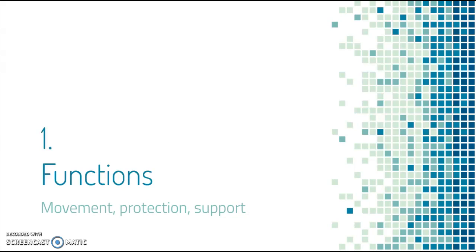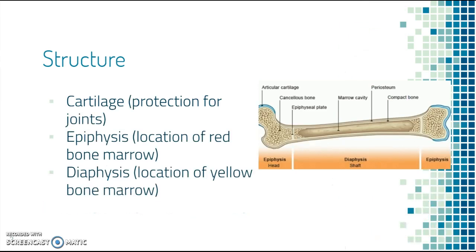The functions of the skeletal system can be summarized into movement, protection, and support. The skeletal system is going to give the body its shape, protect the vital internal organs, allow for movement, and store minerals and produce blood cells.